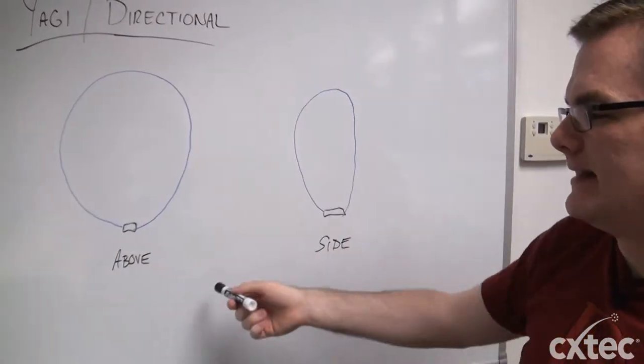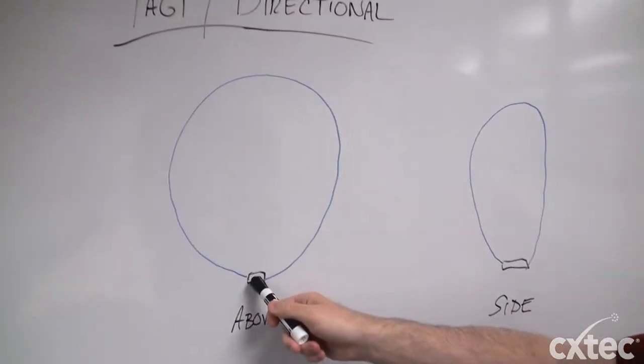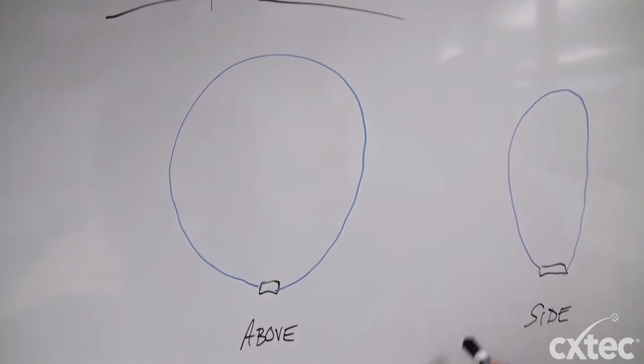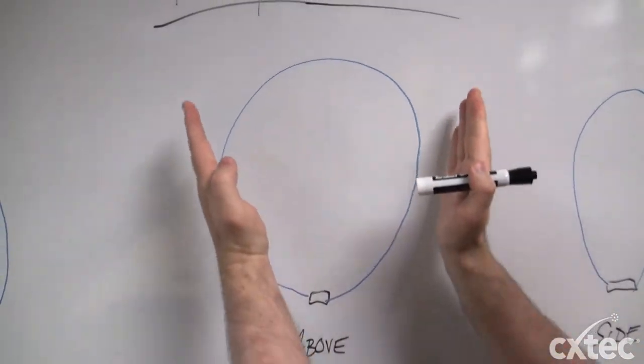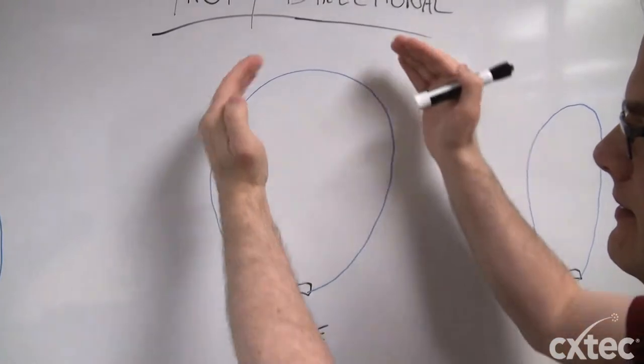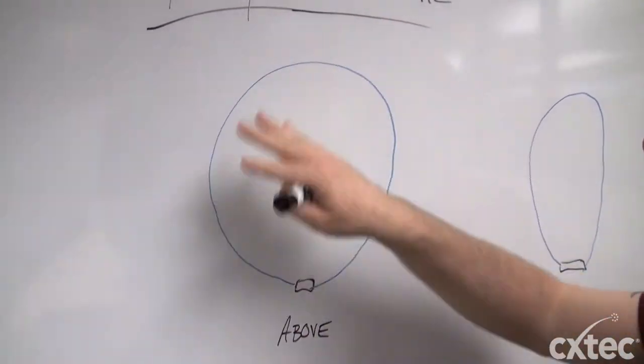Here, looking more of a Yagi style, from above, you'll see that that radiating pattern does not go all the way around the antenna. But instead, it kind of goes out almost in a cone shape and covers more of an oval in area.